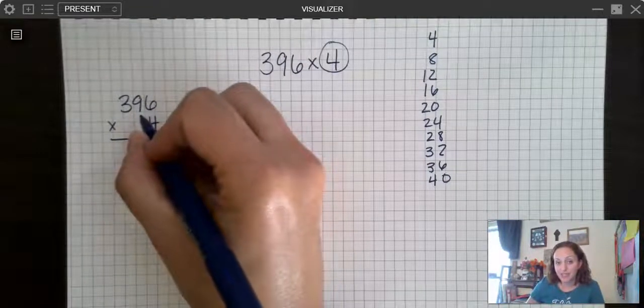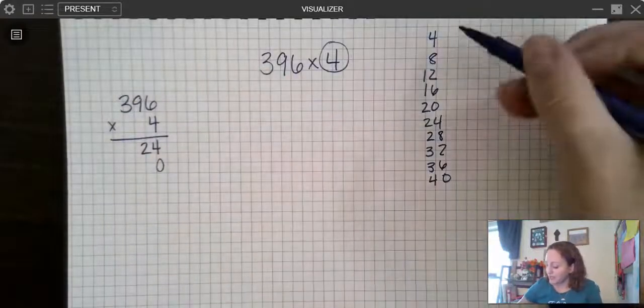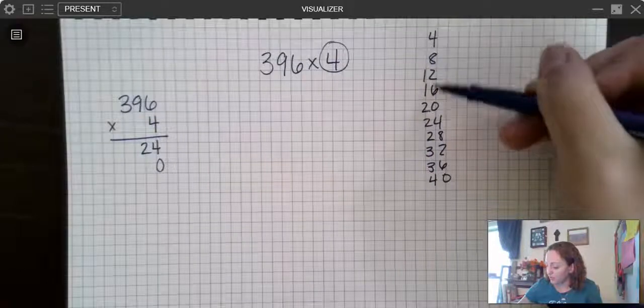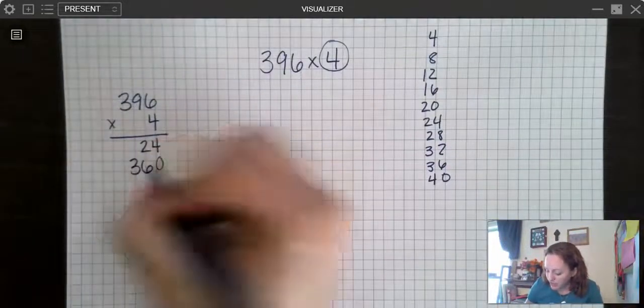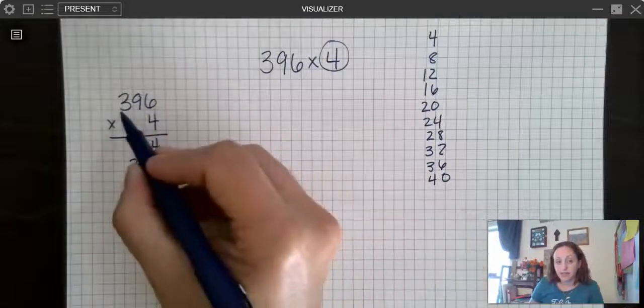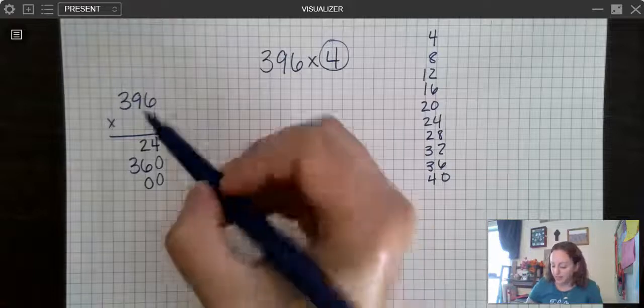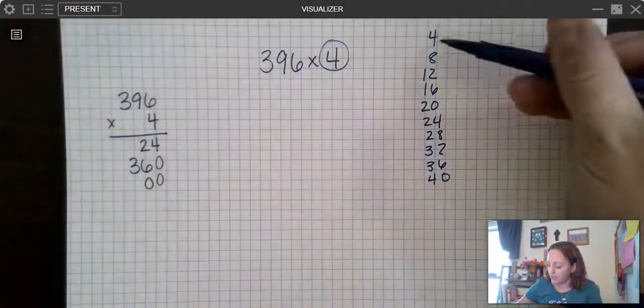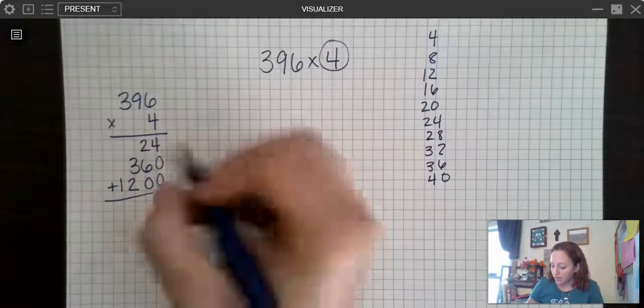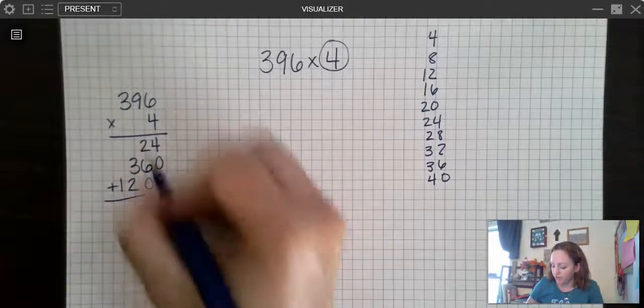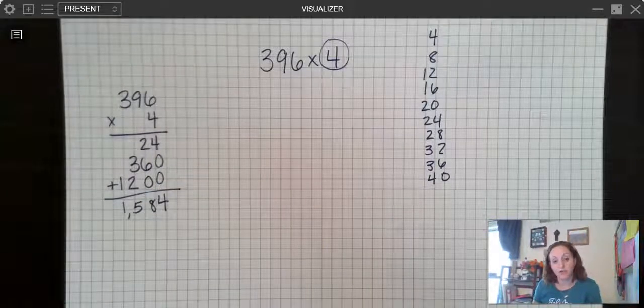Four times 90. Remember, I'm in the tens place now. So it's going to have to end with a zero. Four times 90, that would be 360. And this is in the hundreds place. So I know I'm going to have two zeros at the end. And I have four times three, that's 12. So 1,200. And when I add all of that together, I get 1,584.